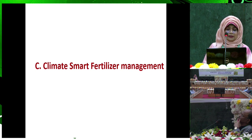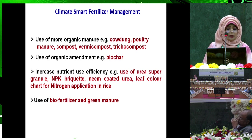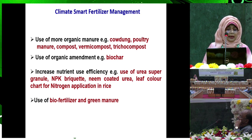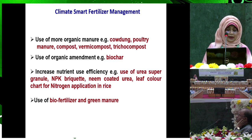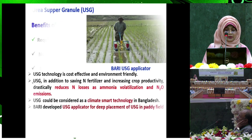Climate smart fertilizer management involves use of organic manure like cow dung, poultry manure compost, vermicompost, and tricocompost; use of organic amendments like biochar; increasing nutrient use efficiency through urea supergranule and NPK briquette and neem-coated urea; leaf color chart for nitrogen application for rice; and use of biofertilizer and green manure. The benefits include requiring less quantity of energy, no energy for organic manure, sequestering carbon in soil, and emitting less quantity of greenhouse gas.